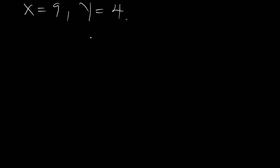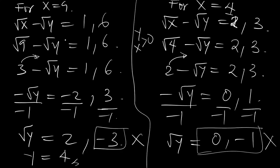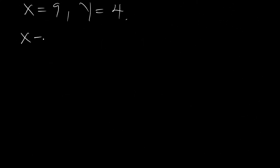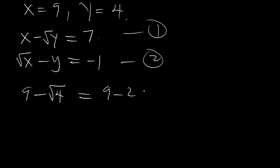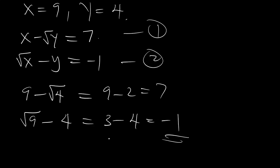So the only solution here is x equal to 9 and y equal to 4. Let's substitute into the equations to verify. For the first equation: x minus the square root of y equals 9 minus the square root of 4, which is 9 minus 2, which is 7. For the second equation: the square root of 9 minus 4 equals 3 minus 4, which equals minus 1. That means this is a valid solution.